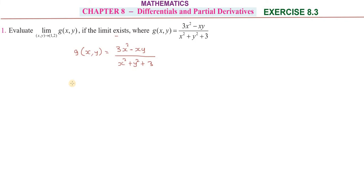Now, the limit as x, y tends to 1, 2 of g(x,y) equals the limit as x, y tends to 1, 2 of (3x² - xy)/(x² + y² + 3).